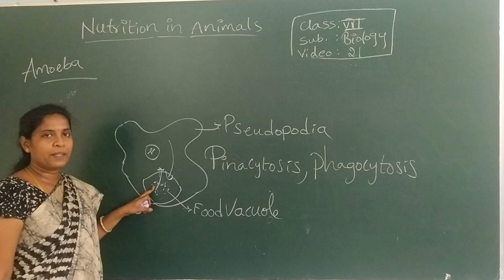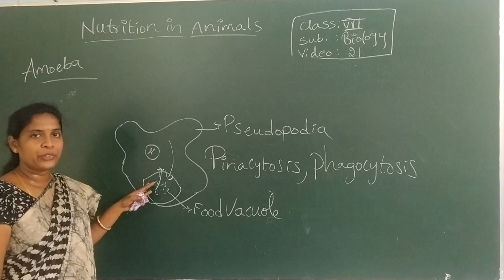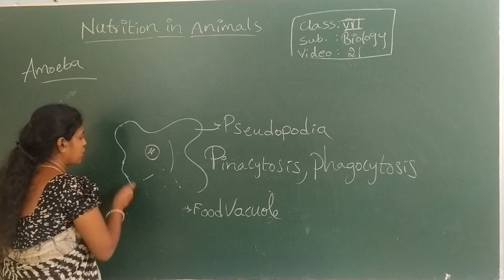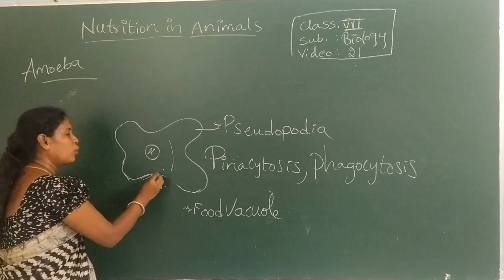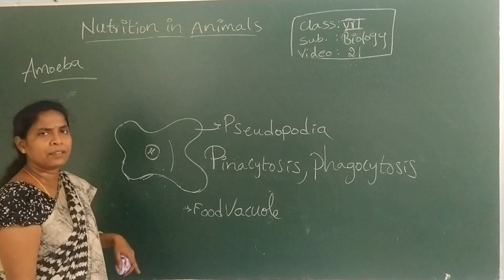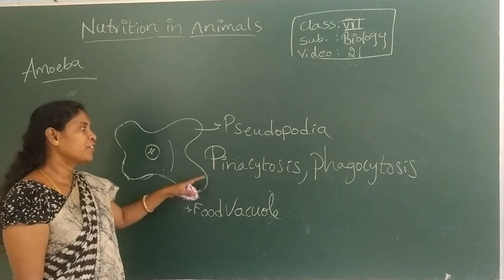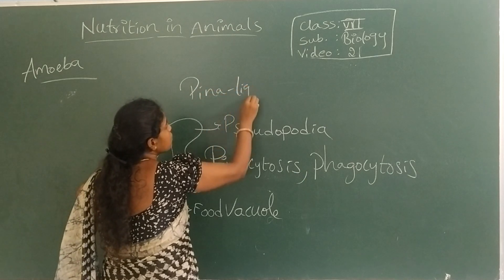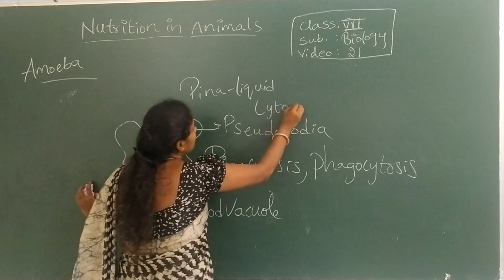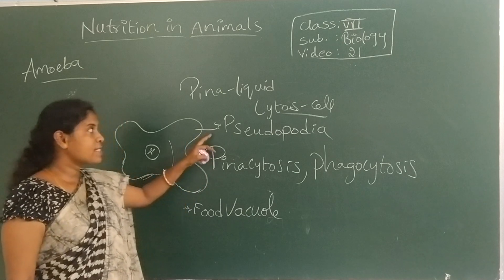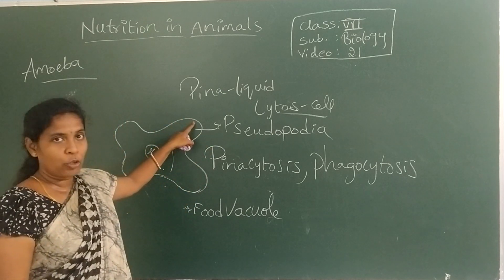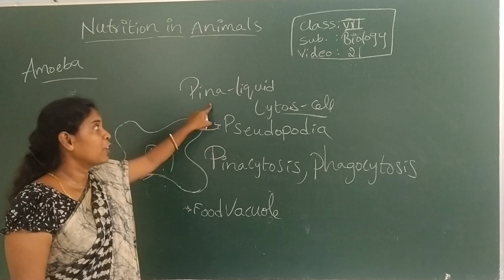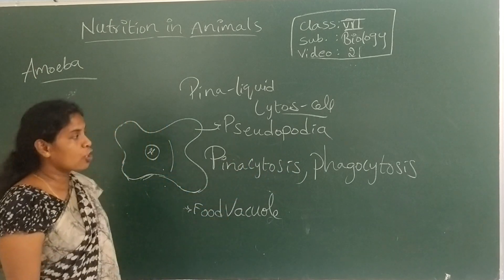Amoeba is a unicellular organism and does not have a separate digestive system. It digests food inside the food vacuole and absorbs it. After absorption, the pseudopodia return to normal position and the amoeba changes shape again. The pseudopodia are also helpful for movement. Pino means liquid, so pinocytosis refers to taking in liquid food through the cell membrane. Phago means solid form. The cell membrane is modified as pseudopodia, which helps in absorption of both liquid and solid food.